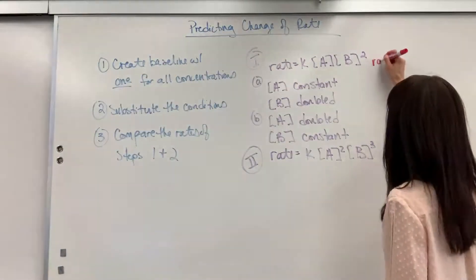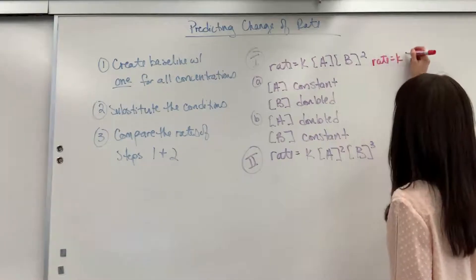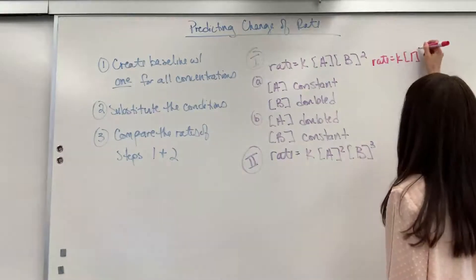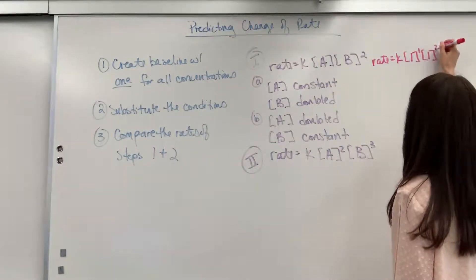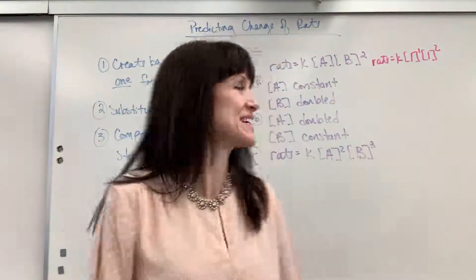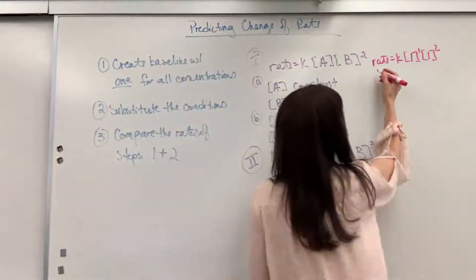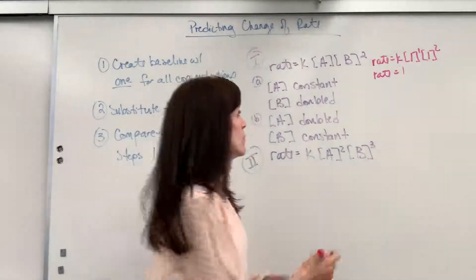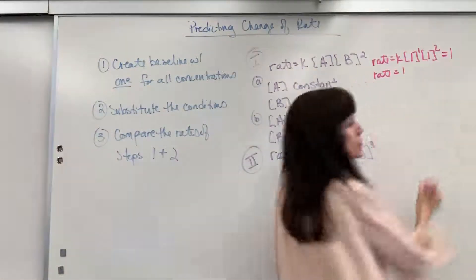I'm going to say rate equals K, and I'm going to put 1 in for every concentration. 1 to the 1 times 1 to that second order. And remember the orders, we just use those as exponents. This is going to be rate equals 1. The rate will equal 1.